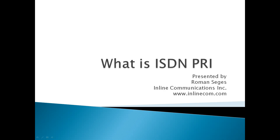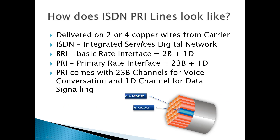Hello and welcome to my presentation. Today we'll cover the advantages of ISDN PRI. ISDN PRI is a technology that has been around for at least 30 years and it is really the highest level of voice services in North America as we know it. It's delivered on two or four copper wires from a local telco carrier.